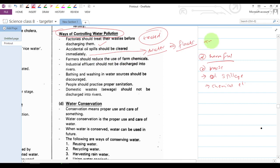Farmers should reduce the use of farm chemicals. When we talk about farm chemicals, we talk about fungicides, pesticides, and herbicides. The farmers should make sure that they reduce the usage of those chemicals.